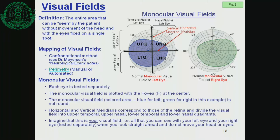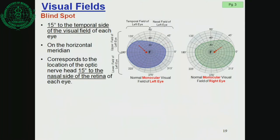Imagine that this is your visual field - all that you can see with your left eye and your right eye when you look straight ahead and do not move your head or eyes. There is another important concept: the blind spot. The blind spot is located 15 degrees to the temporal side of the visual field of each eye, on the horizontal meridian. It corresponds to the location of the optic nerve head, 15 degrees to the nasal side of the retina of each eye.